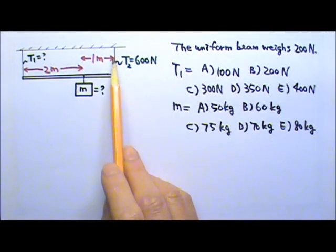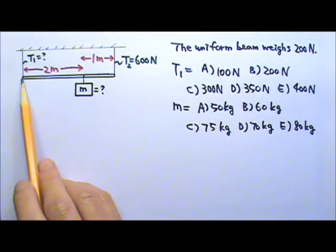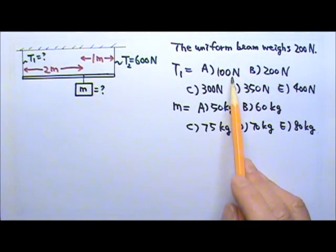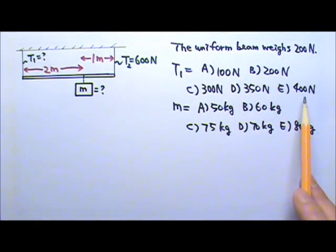The tension T2 in the right side cable is 600N. What is the tension T1 in the left side cable? 100N, 200N, 300N, 350N, or 400N.